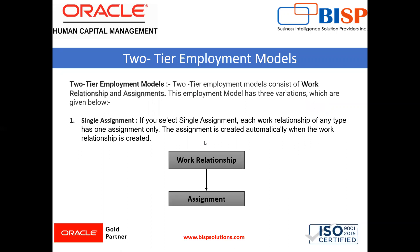The first is the two-tier employment model. The two-tier employment model consists of work relationship and assignment. This employment model has three variations. The first is single assignment. If you select single assignment, each work relationship of any type has one assignment only. The assignment is created automatically when the work relationship is created.